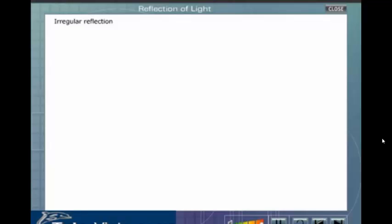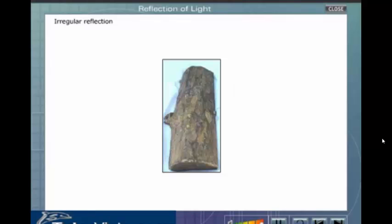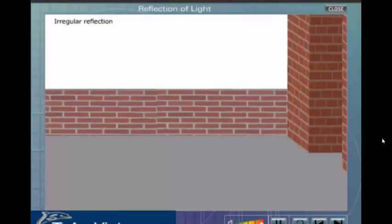Irregular reflection takes place when a beam of light falls on rough surfaces like walls, wood, etc. Here the different portions of the surface reflect the incident light in different directions.